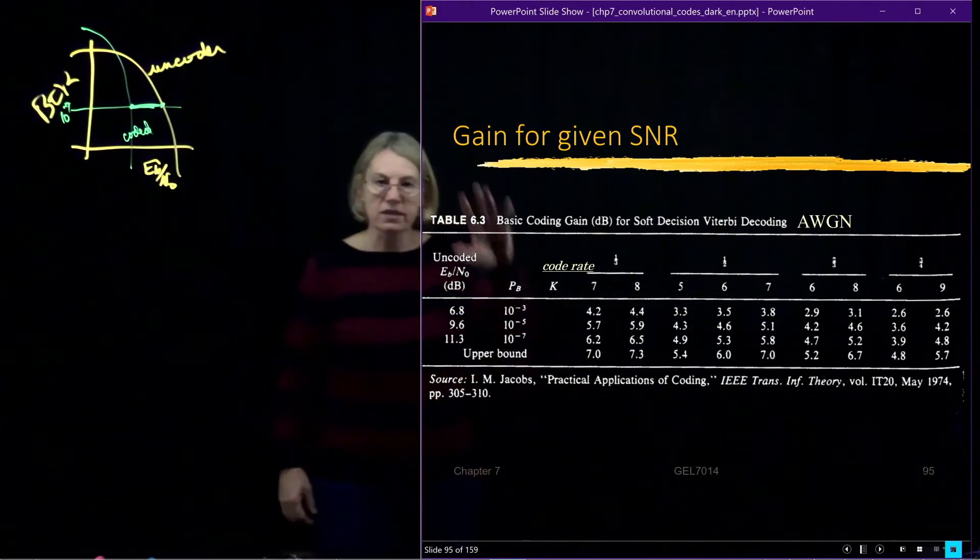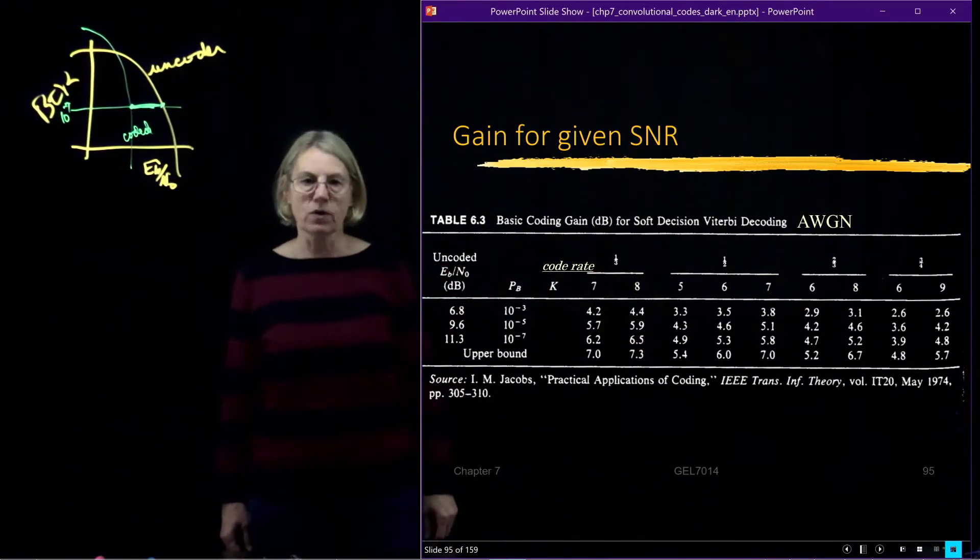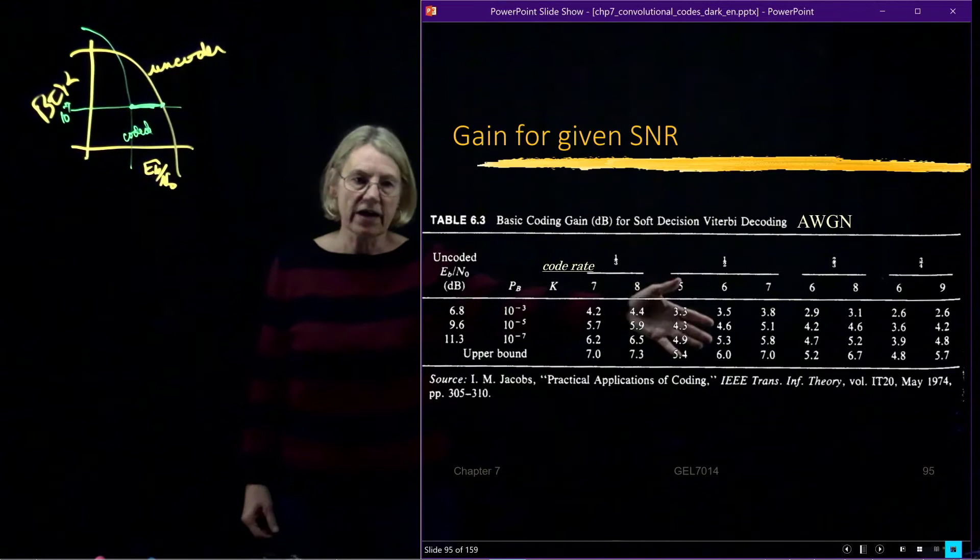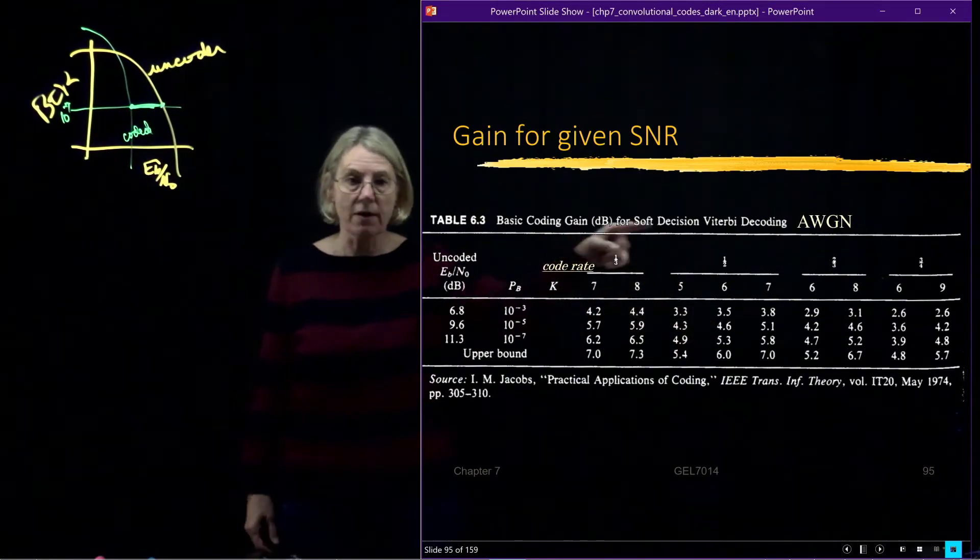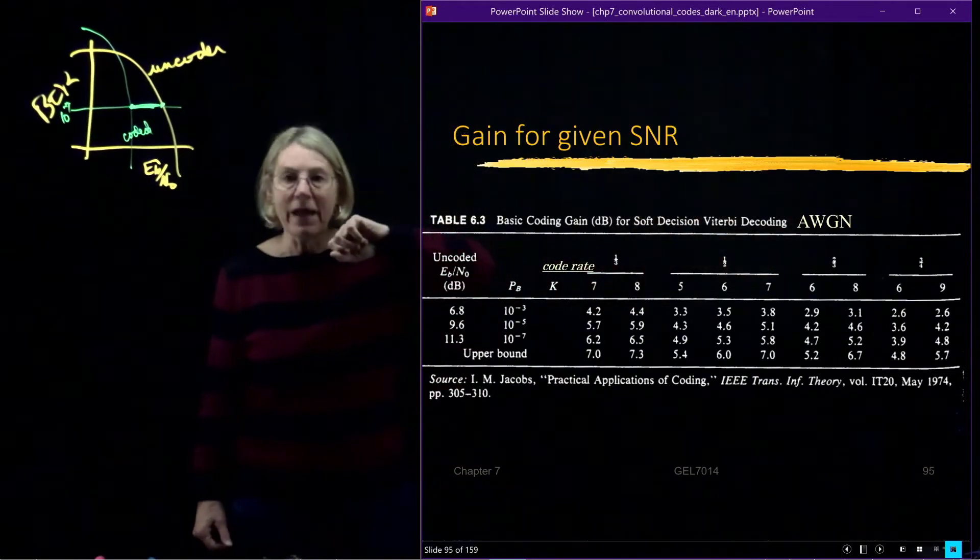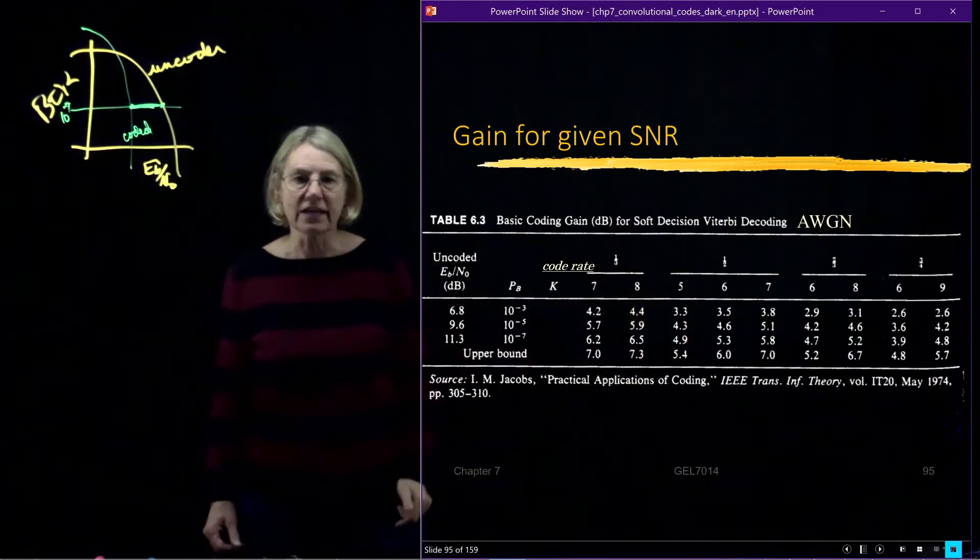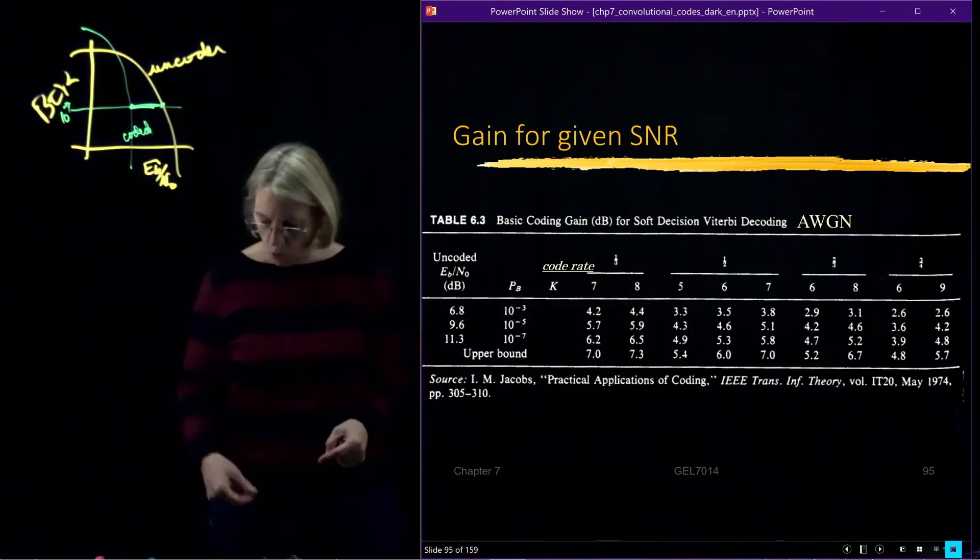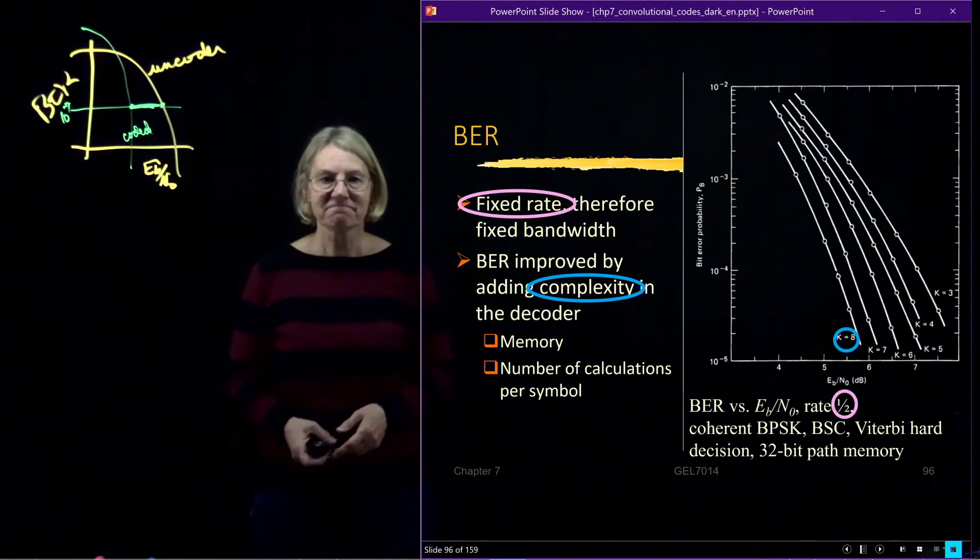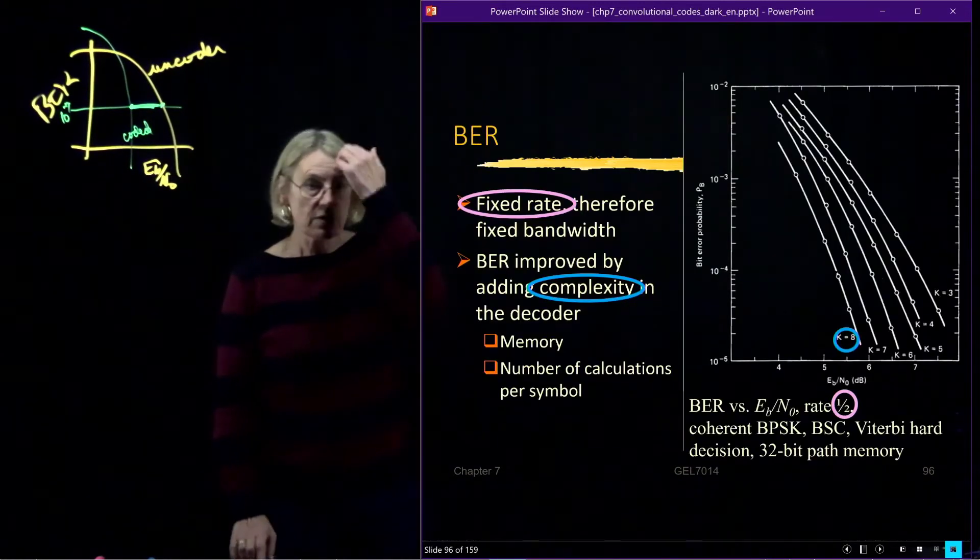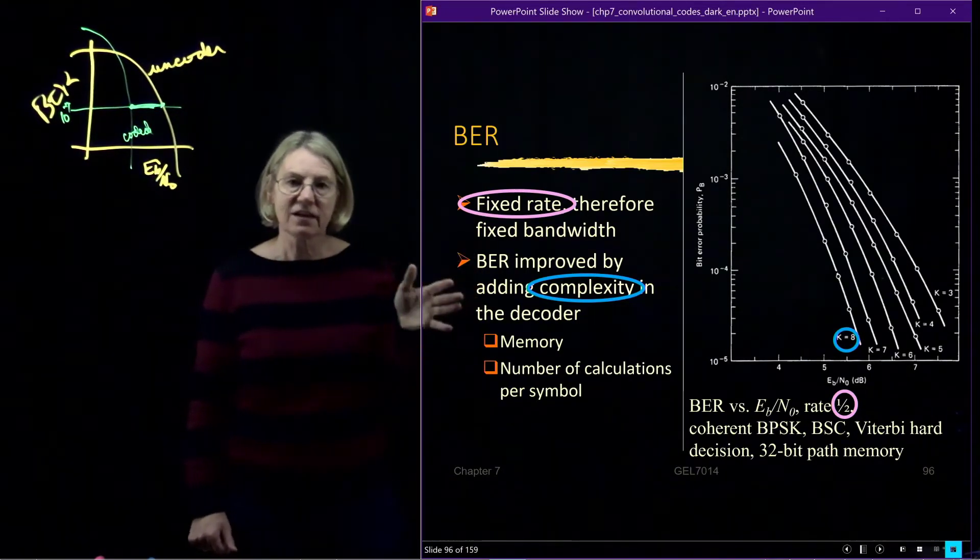So this is one way that you could choose, for instance, the level of coding that you needed, what gain you were looking for in your system, and what kind of constraint length, what kind of compromise. Remember, code rate tells you how much expansion you need in your bandwidth in order to achieve the coding. And here we would get the gain that you'll get in exchange for paying for more spectrum.